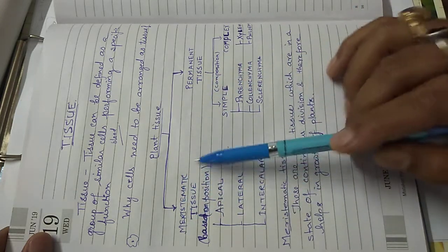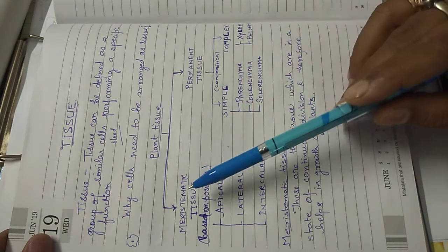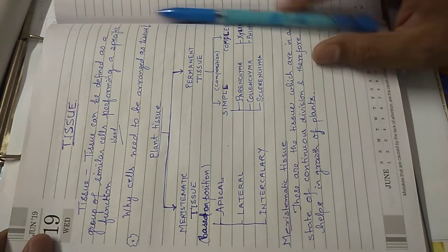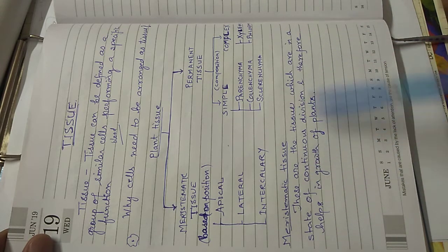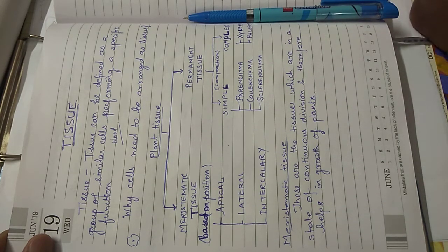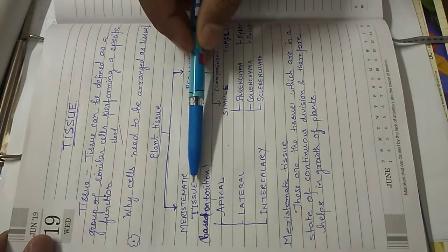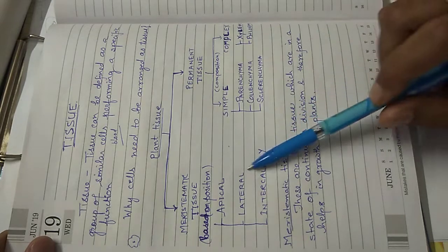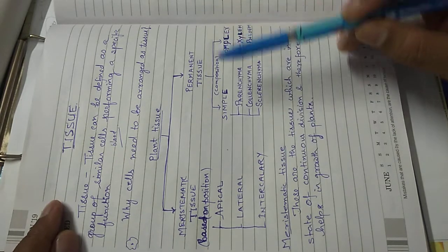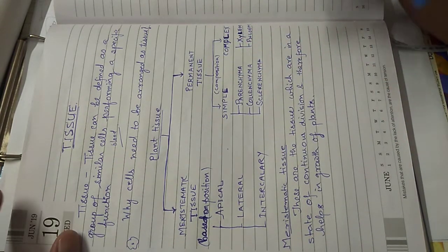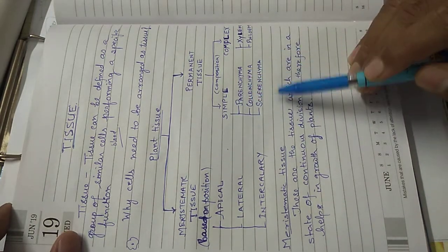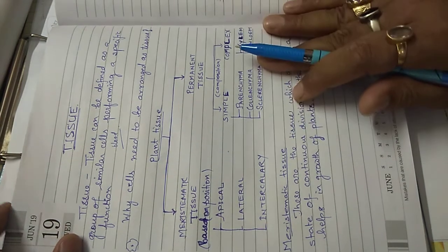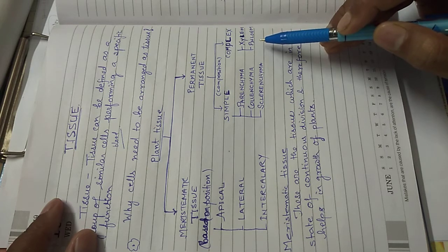Plant tissue can be broadly classified as meristematic tissue and permanent tissue. Meristematic tissues are those where cells are in a state of continuous division, helping in the growth of plants. Based on location, meristematic tissue is classified as apical, lateral, and intercalary. Permanent tissue, based on cell composition, is classified as parenchyma, collenchyma, and sclerenchyma — called simple permanent tissue — and complex permanent tissue like xylem and phloem, made up of more than one type of cell.